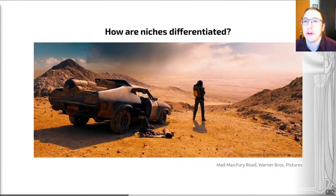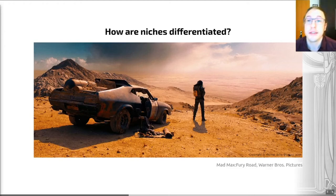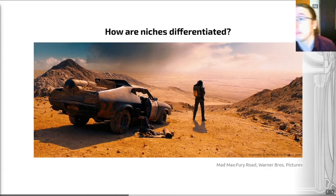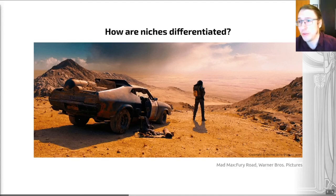We also have forms of conditional differentiation. This occurs when species differ in their competitive abilities based on varying environmental conditions. A nice example is a desert — it's a bit dry, as is the premise of much of the society portrayed in Mad Max: Fury Road. If you want to know more about it, you can ask in Zoom, but you may also want to watch the movie.